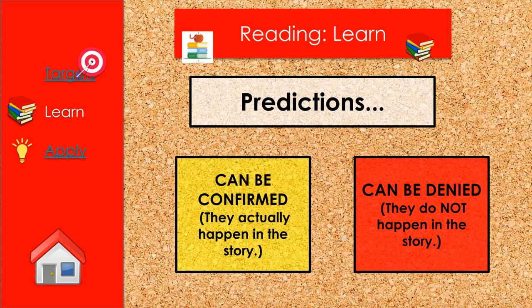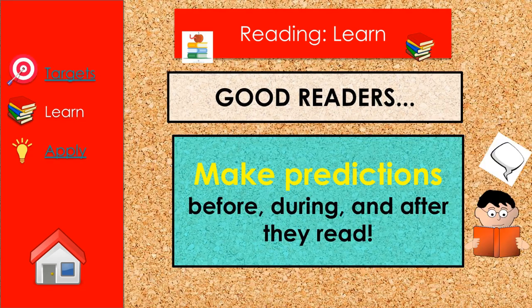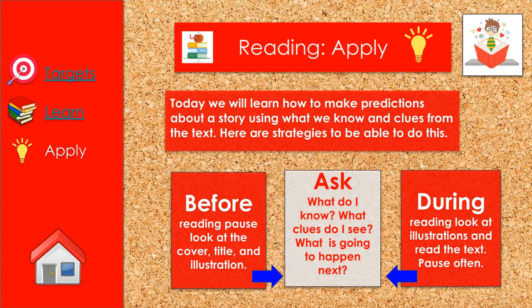Predictions can be confirmed — they actually happen in the story. Predictions can be denied — they do not happen in the story. Good readers make predictions before, during, and after they read. Today we'll learn how to make predictions about a story using what we know and clues from the text.